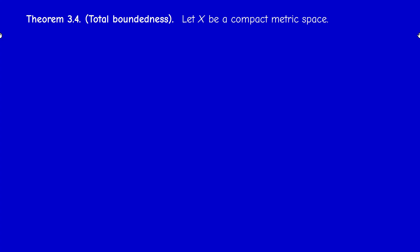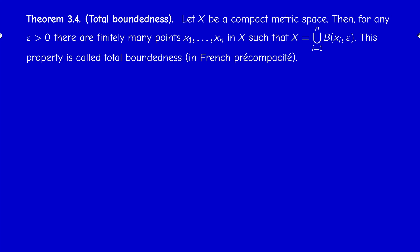If X is a compact metric space, then for any positive epsilon we can cover the space by finitely many balls of radius epsilon. This property is called total boundedness. We need the assumption of a metric space in order to talk about balls. Such a metric space possessing this property is called totally bounded, or in French, precompact.